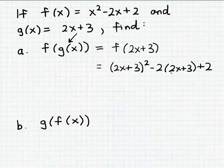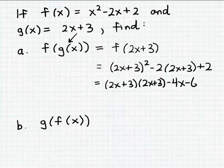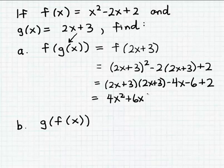Now we just have a little algebra left to simplify. (2x plus 3) squared means multiplying (2x plus 3) by itself: (2x plus 3)(2x plus 3). And minus 2 times (2x plus 3) distributes to give minus 4x minus 6, plus the 2 at the end. Expanding the square: 2x times 2x is 4x squared, then 6x, then another 6x, then 9. So we have 4x squared plus 6x plus 6x plus 9 minus 4x minus 6 plus 2.